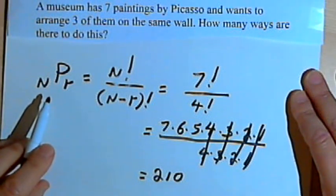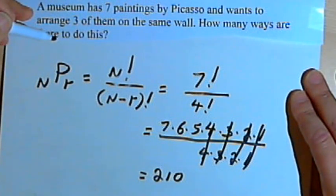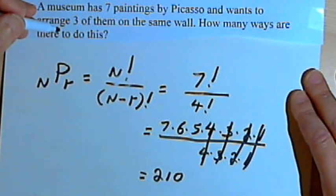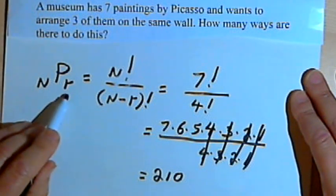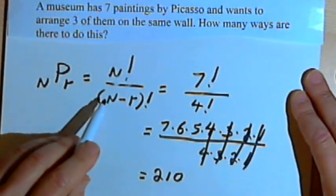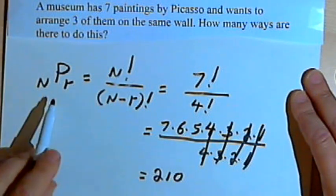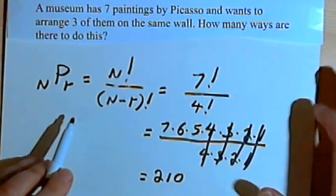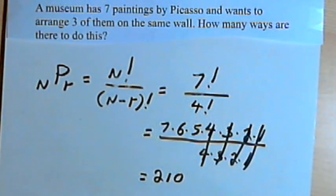So once again, when you've got some set of objects and you're permuting or arranging just some of them, you're going to use this NPR equals N factorial over N minus R factorial. You're going to use that formula. Okay, let's deal with a different kind of problem.